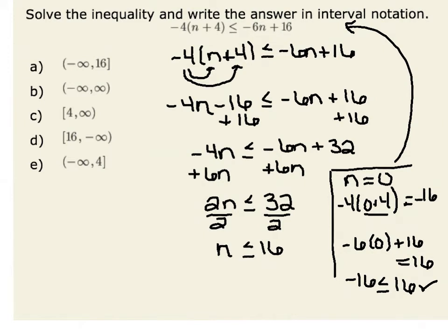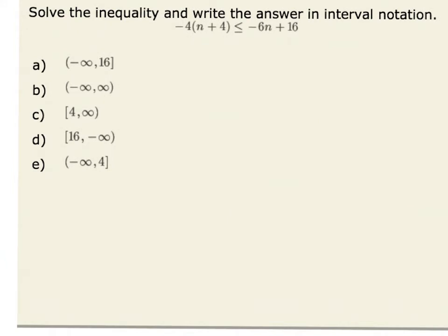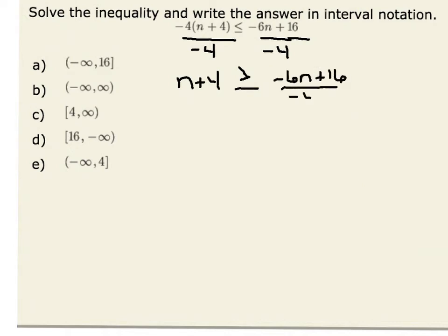This is one way that I could solve the problem. Another way is to recognize that I have negative 4 times a quantity of n plus 4. Therefore, I could start off by dividing both sides of my inequality by negative 4. Since I'm dividing by a negative 4, I would reverse the inequality. Therefore, I'd have n plus 4 is greater than or equal to negative 6n plus 16 all divided by negative 4.